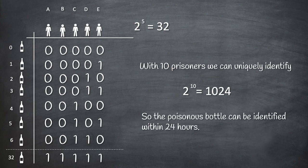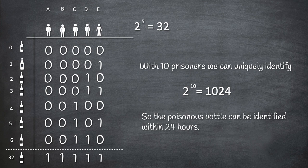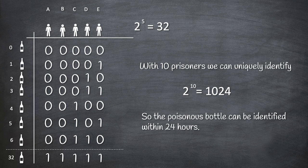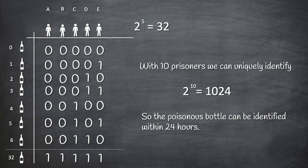And in this puzzle, the total number of bottles is only 1000, which is less than the maximum number of bottles possible with 10 prisoners. So we only need 1 round of testing or 24 hours to find out the poison bottle.